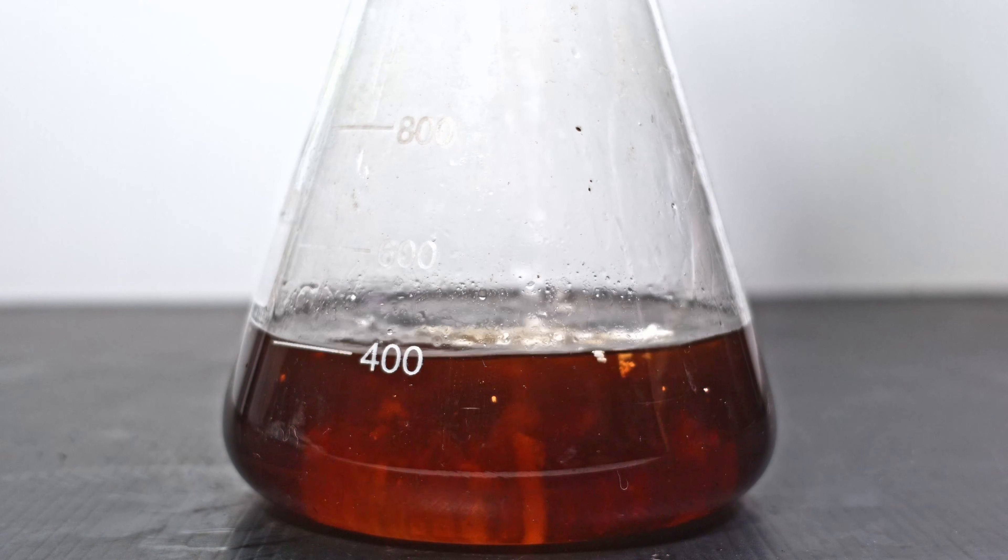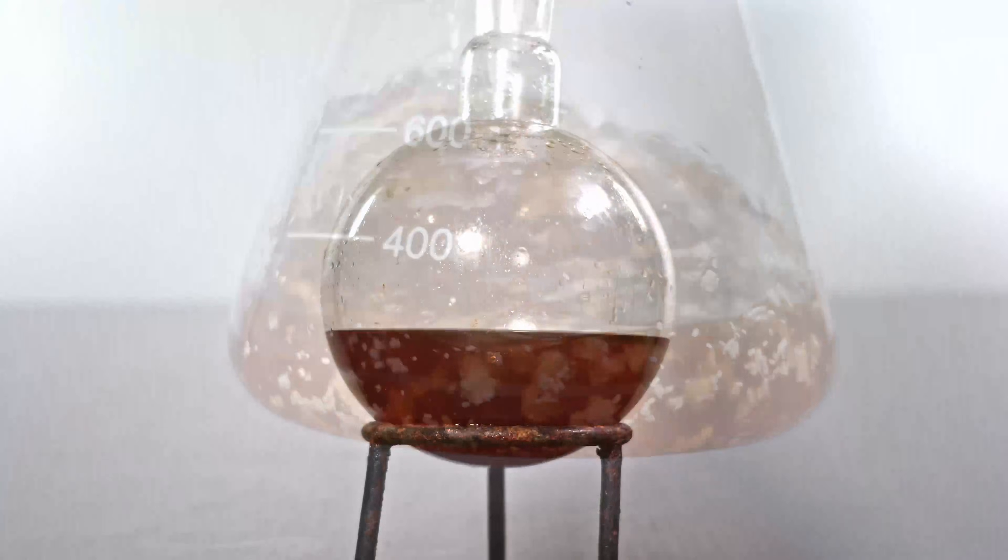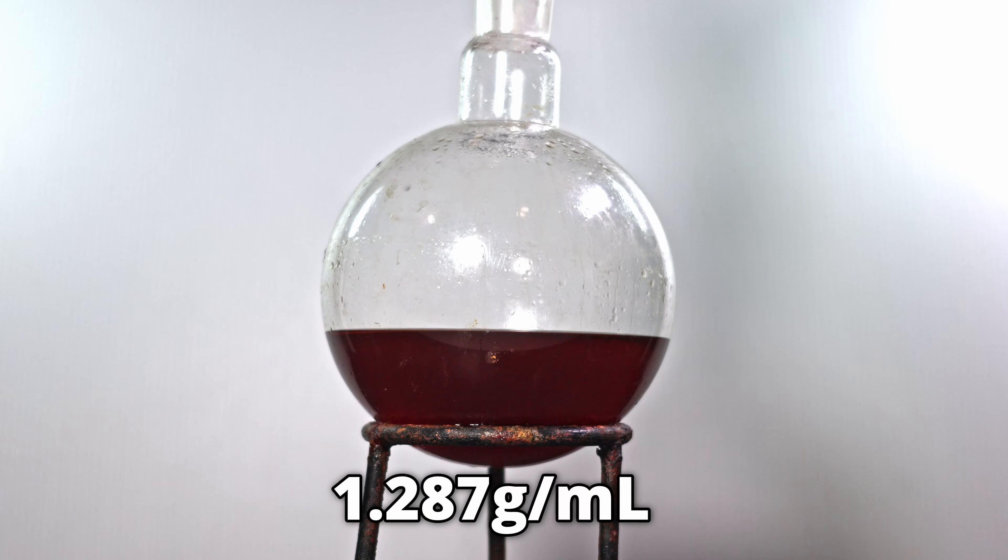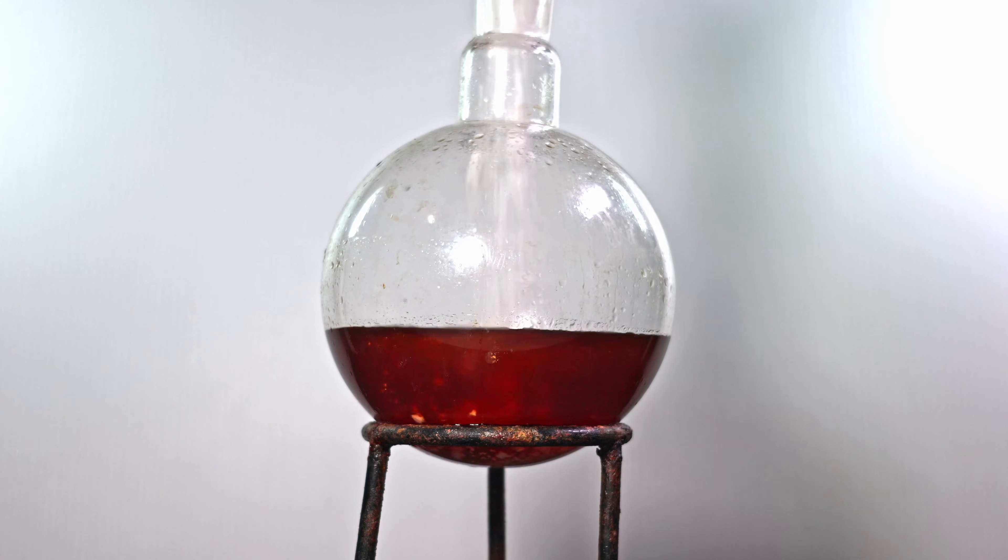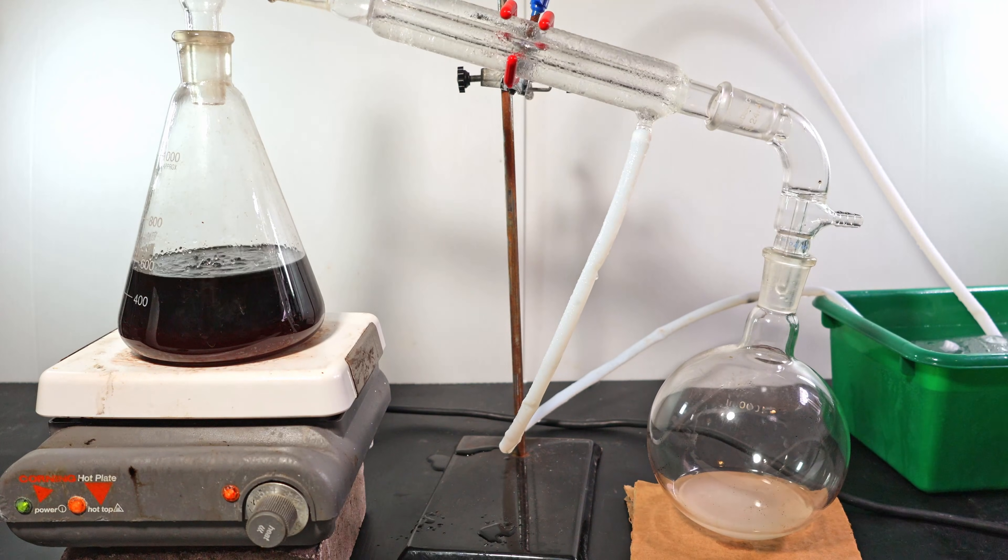I add some magnesium sulfate and stir vigorously to combat this. The lighter crude is 1.287, which is surprisingly close to the heavier crude. I also add in some magnesium sulfate to sop up some of the water.